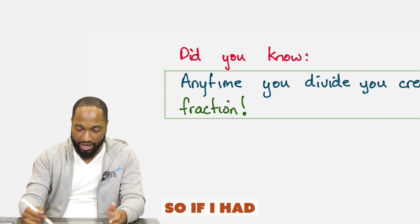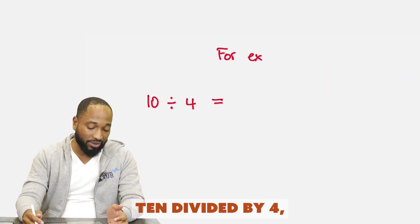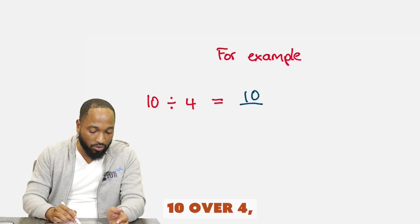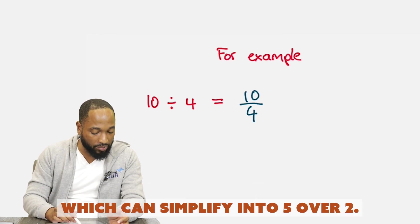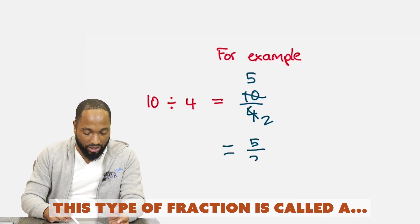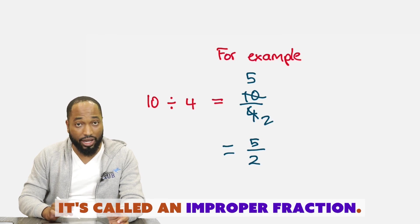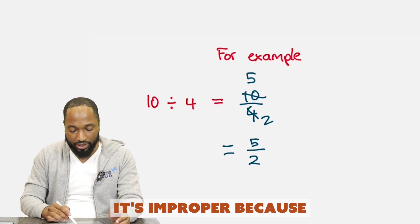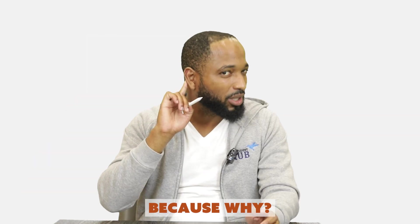So if I had 10 divided by 4, I can actually write that as a fraction: 10 over 4, which can simplify into 5 over 2 when I reduce by 2. This type of fraction is called an improper fraction. It's improper because, why?